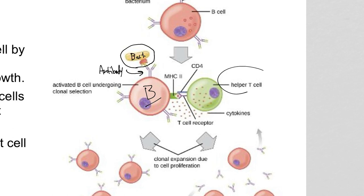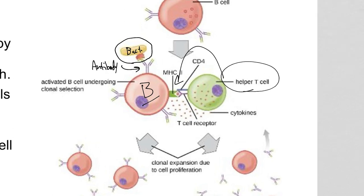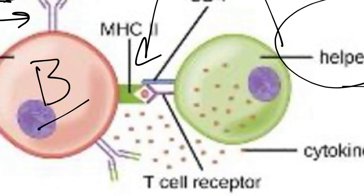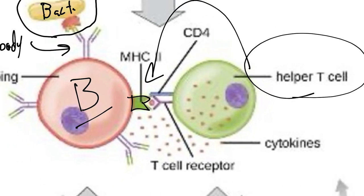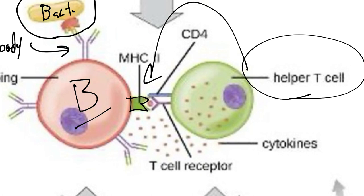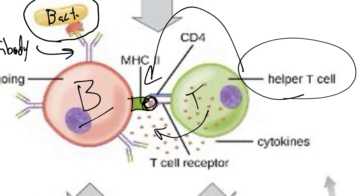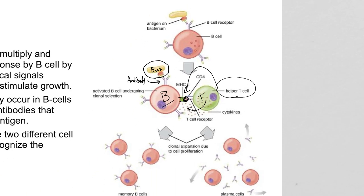The second thing required is that a helper T cell has to agree. The MHC of the B cell and the T cell receptor on the helper T cell both have to bind the antigen — illustrated by that little red dot. If that happens and they make direct contact, then the helper T cell is going to secrete some cytokines that stimulate that B cell and tell it to divide.